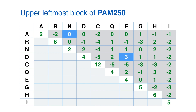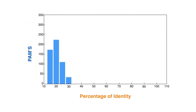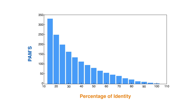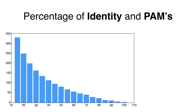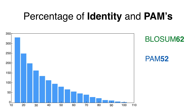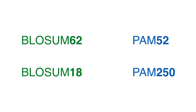The PAM units that correspond approximately to each percentage of identity are depicted in this graph. As expected, as the percentage of identity increases, the number of PAM units decreases, indicating shorter evolutionary times. According to the graph, BLOSUM62 corresponds approximately with PAM52, and PAM250 will be close to BLOSUM18. However, since BLOSUM and PAM matrices are based on different models, these equivalences are not directly reflected in their actual values.